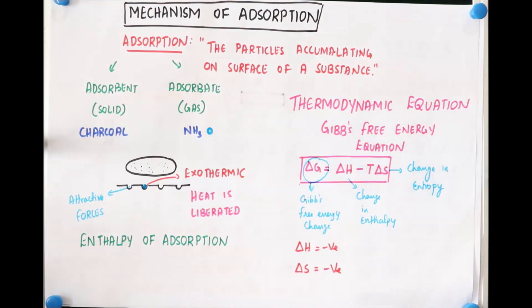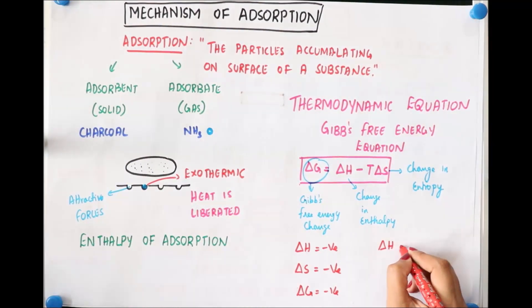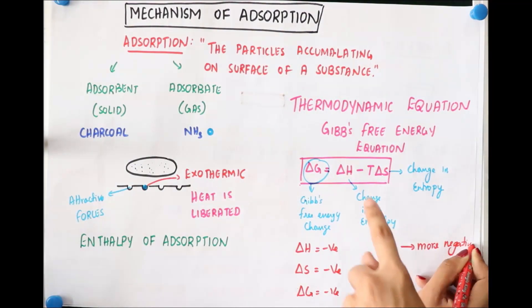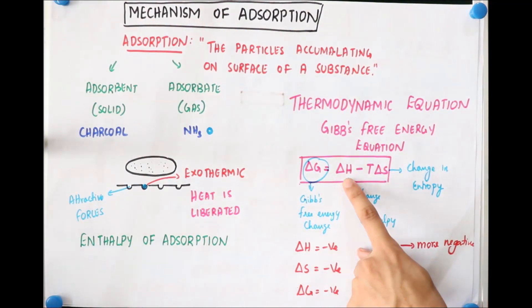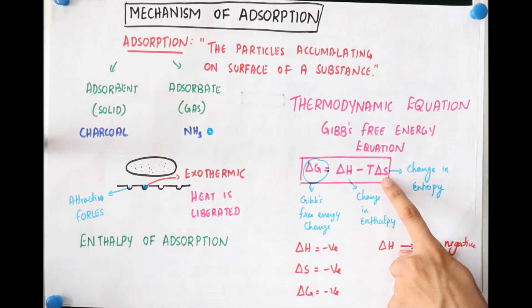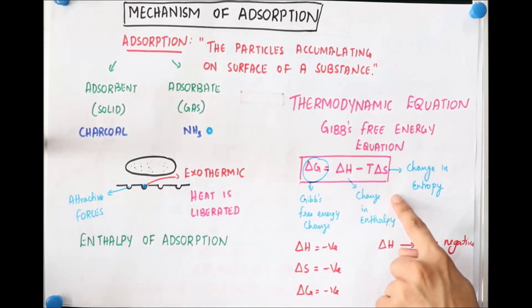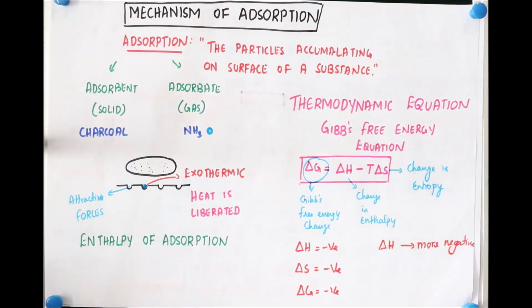Delta G also will be negative. Why? Because the delta H is more negative. So wait, what you're saying is delta H is negative but delta S is also negative, so this becomes positive? Yes, however delta H is more negative than T delta S, so that's why delta G turns out to be negative.